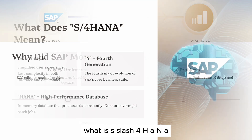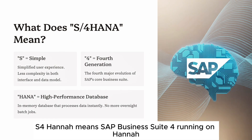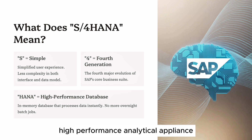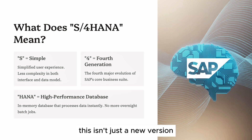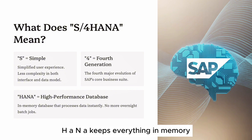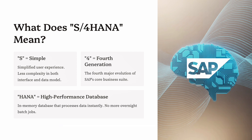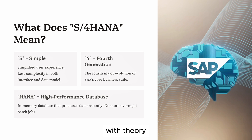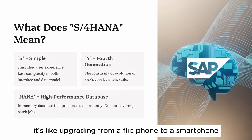What is S/4 HANA? S/4 HANA means SAP Business Suite 4, running on HANA — High Performance Analytical Appliance — SAP's in-memory database. This isn't just a new version; it's a complete architectural shift. Instead of data being stored on disk and read slowly, HANA keeps everything in memory. That means no waiting for reports, real-time decision-making, simplified data models, and improved user experience with Fiori. It's like upgrading from a flip phone to a smartphone.